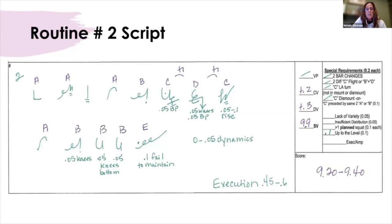The toe up zero to 05 on the rise. Her rotation is pretty good, but she does need to also have rise on that and it's a little flat. The knees on the cast handstand on the high bar, 05. And then she bends her knees through the bottom.